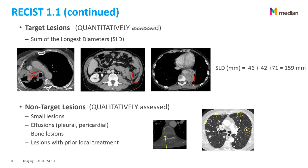This is a visual example of the RECIST 1.1 criteria. Target lesions are quantitatively assessed; the sum of their longest diameters gives a tumor burden of 159 millimeters. Non-target lesions — including small lesions, effusions, and bone lesions — are qualitatively assessed by the reader and tracked to see if there is progression of the disease. The follow-up of non-target lesions can be a source of reader variability, since they are only qualitatively assessed.